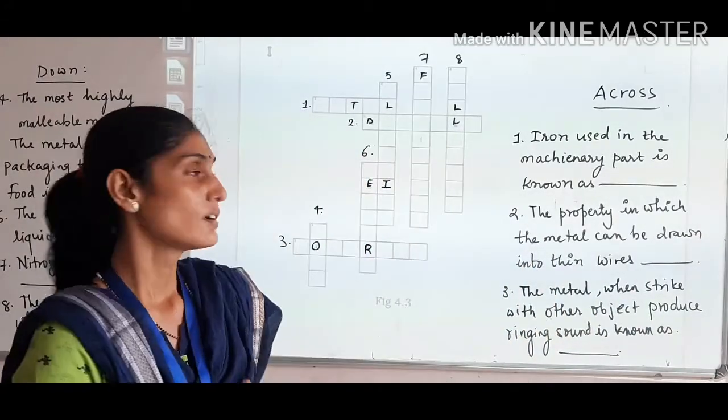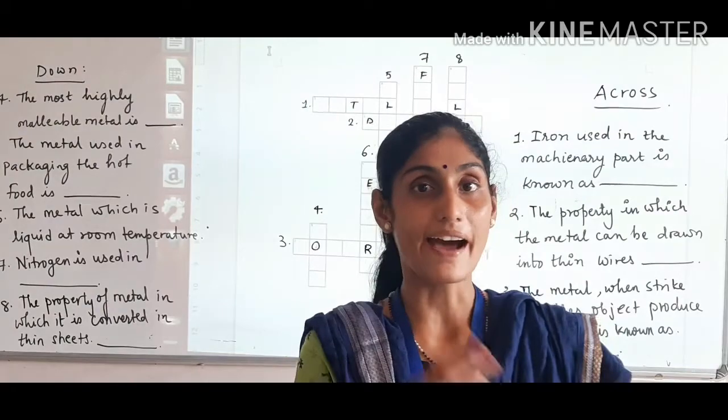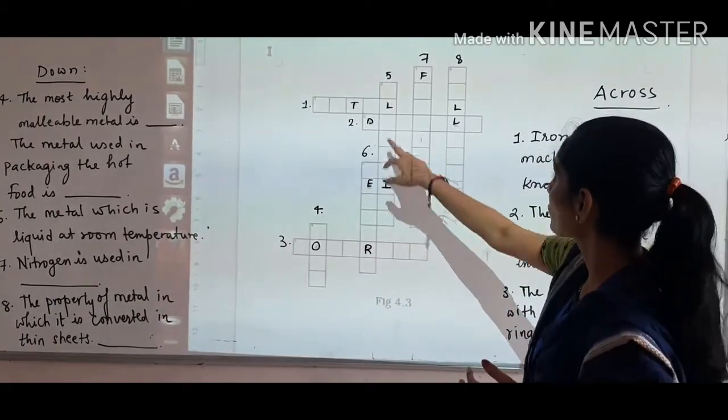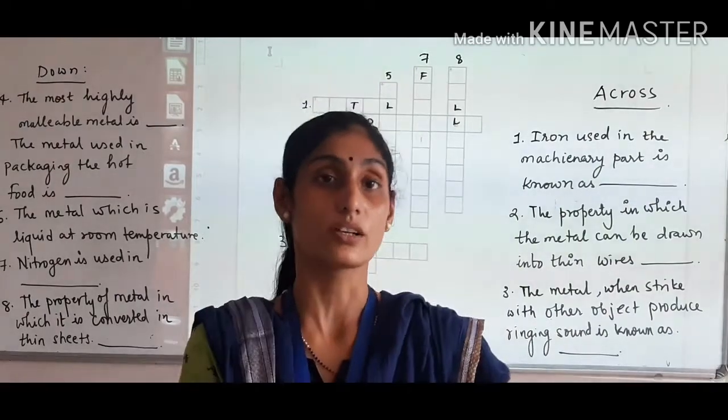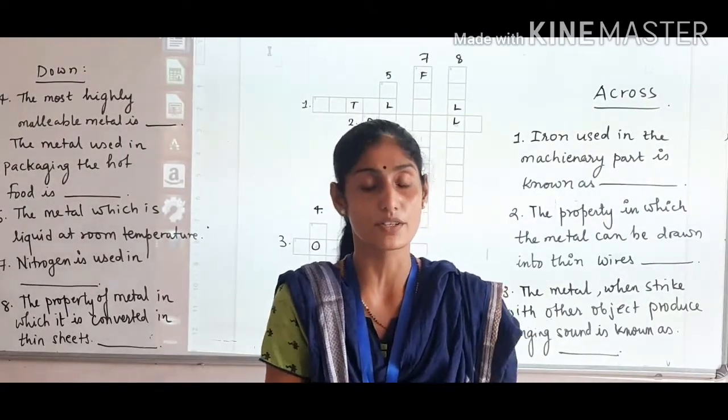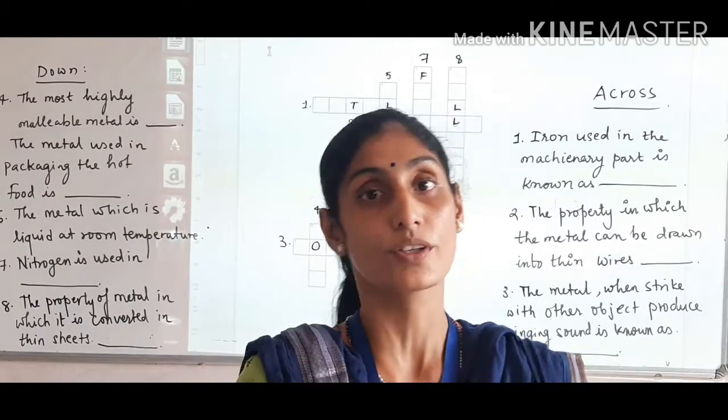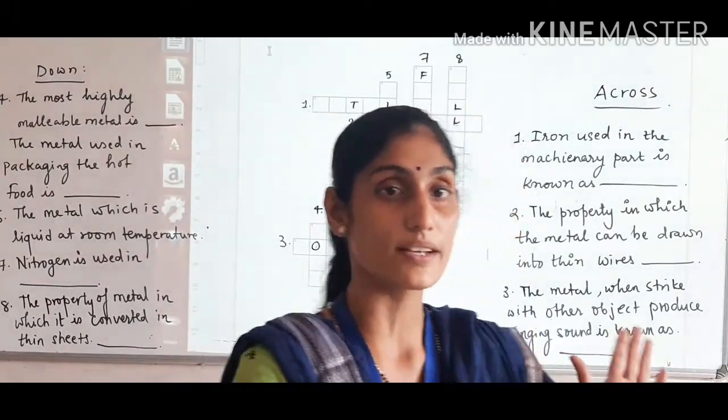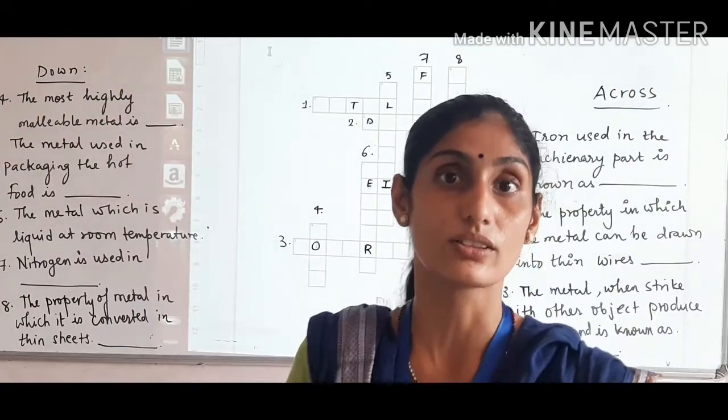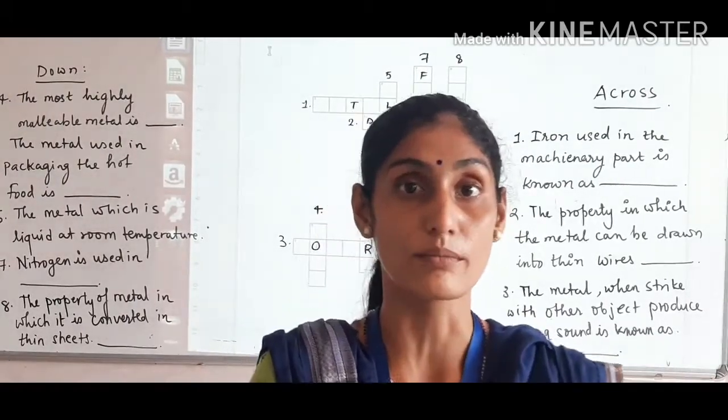Today we have a new particular type that is known as word puzzle. Like we have done in previous classes, we have been solving word puzzles. We have two particular types: the across and down panel. Today's word puzzle is based on the properties, physical properties of the matter, as well as the uses of metals and non-metals. This is the last revision for chapter number 4. That is fiber and plastic.